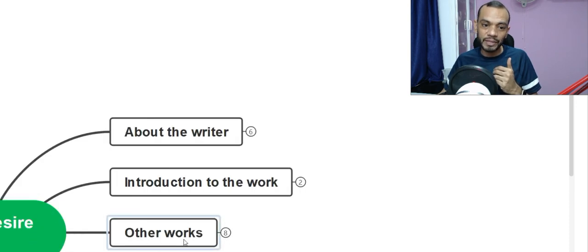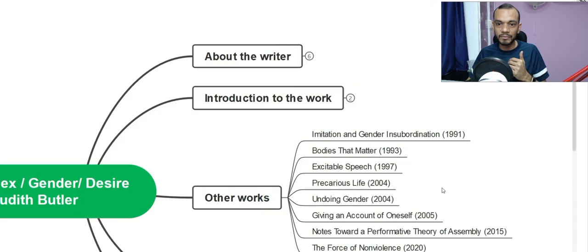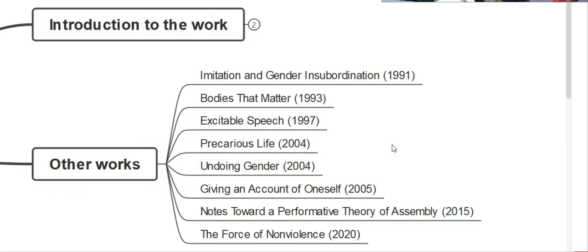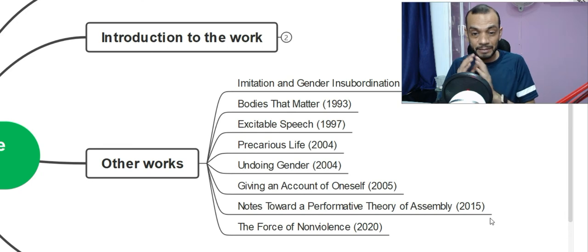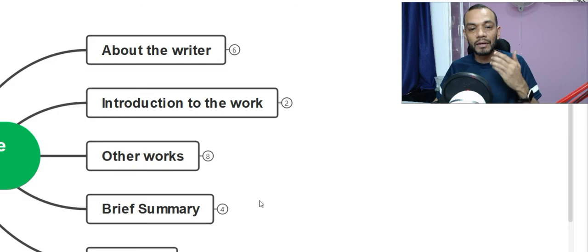Now we move on to her other works, which are very important. As I told you, she's a very important writer. Her works include: 'Imitation and Gender Insubordination' published in 1991, 'Bodies That Matter' in 1993, 'Excitable Speech' in 1997, 'Precarious Life' in 2004, 'Undoing Gender' again in 2004, 'Giving an Account of Oneself' in 2005, 'Notes Towards a Performative Theory of Assembly' in 2015, and 'The Force of Nonviolence' in 2020. She's very active and speaks predominantly on the issue of queer.